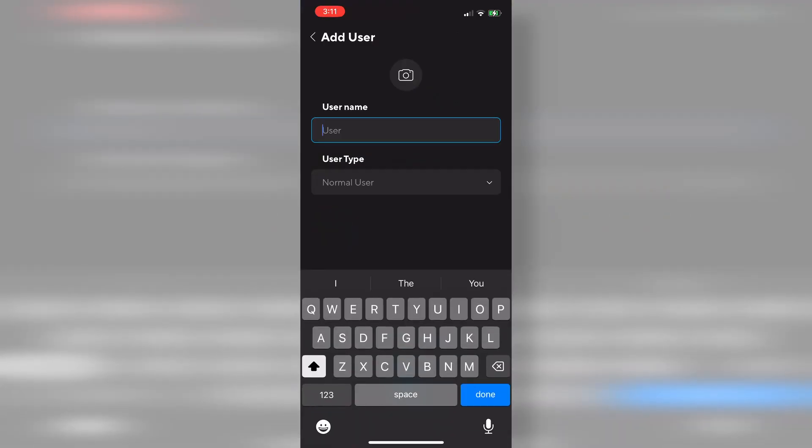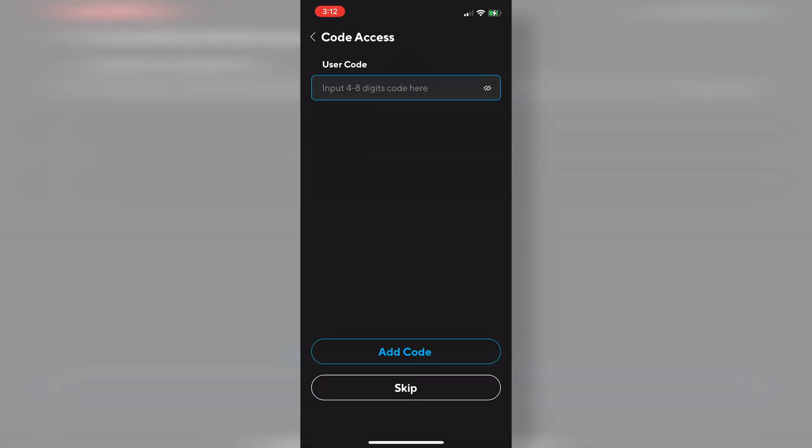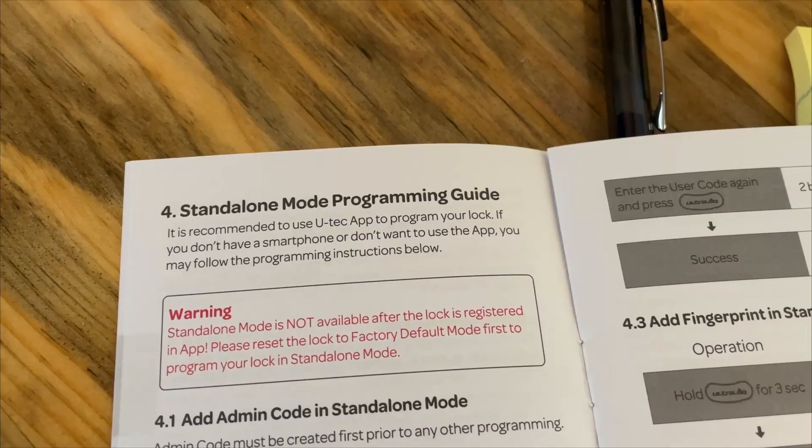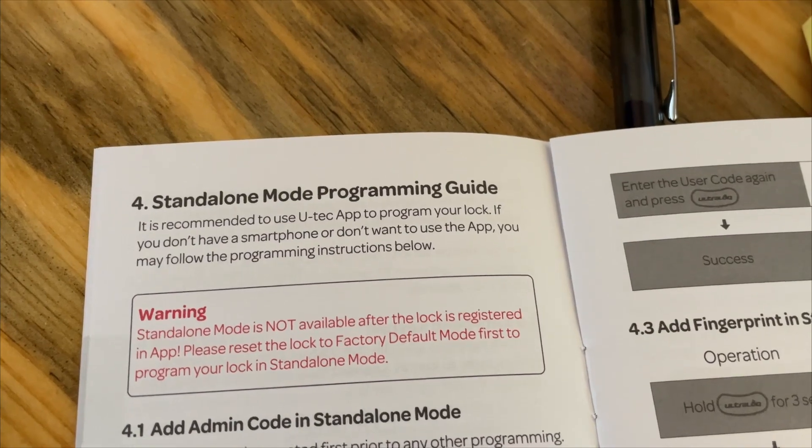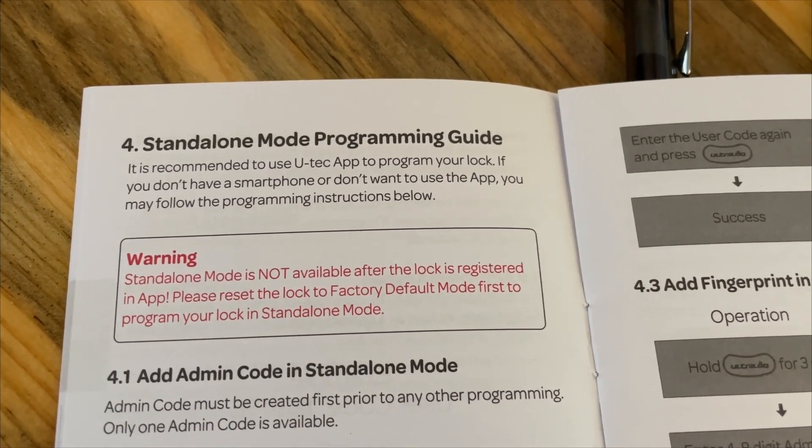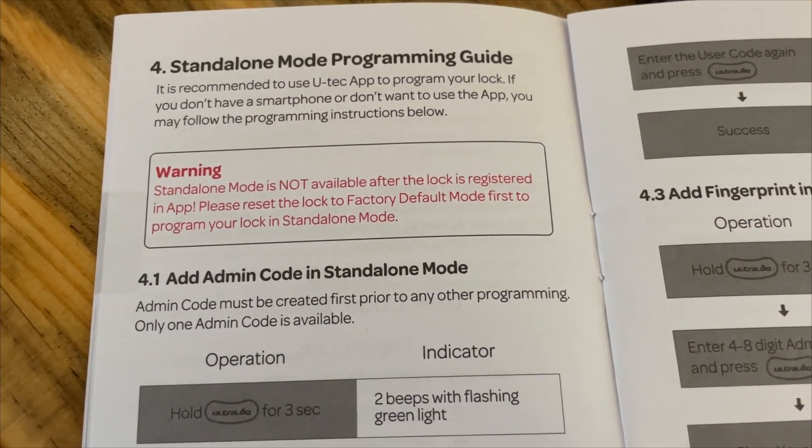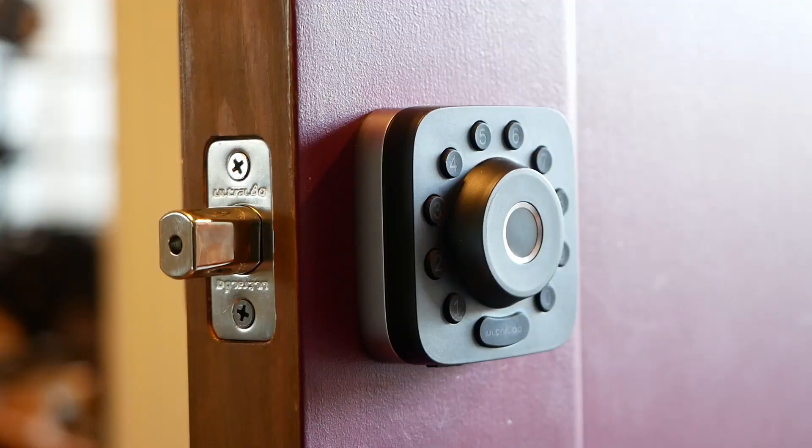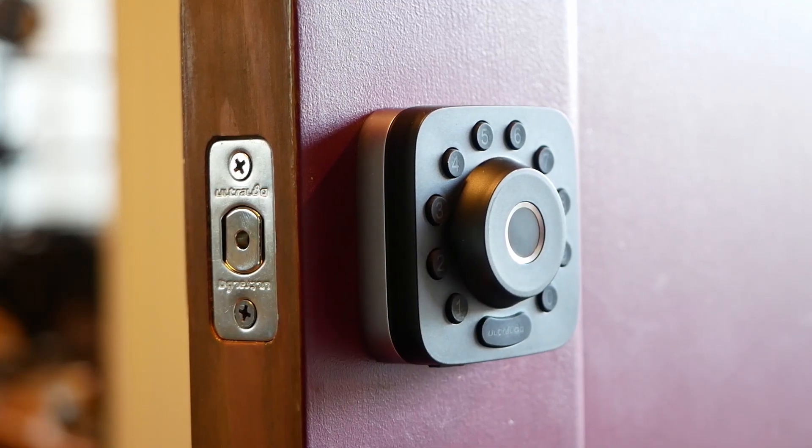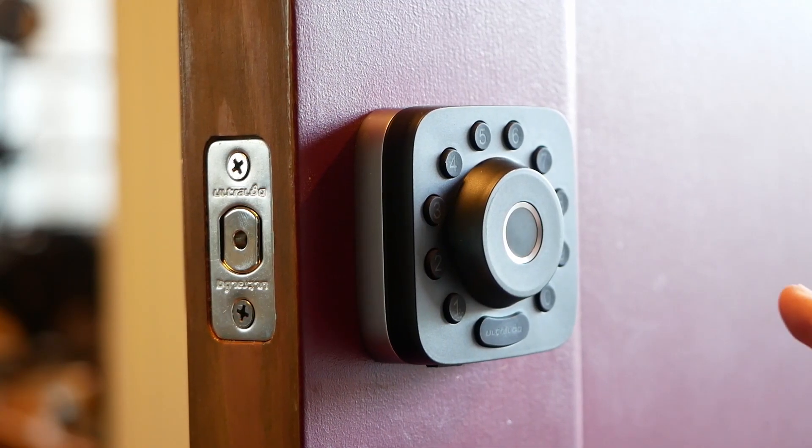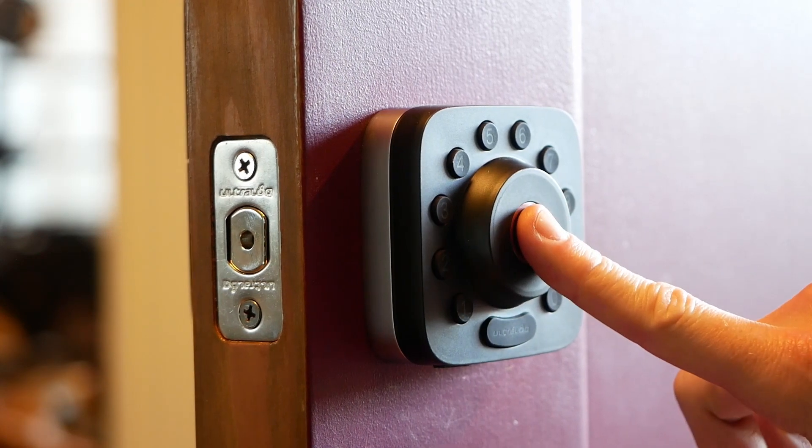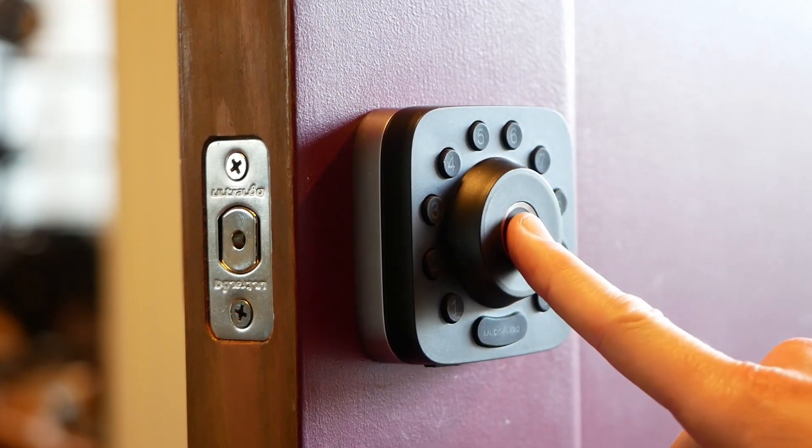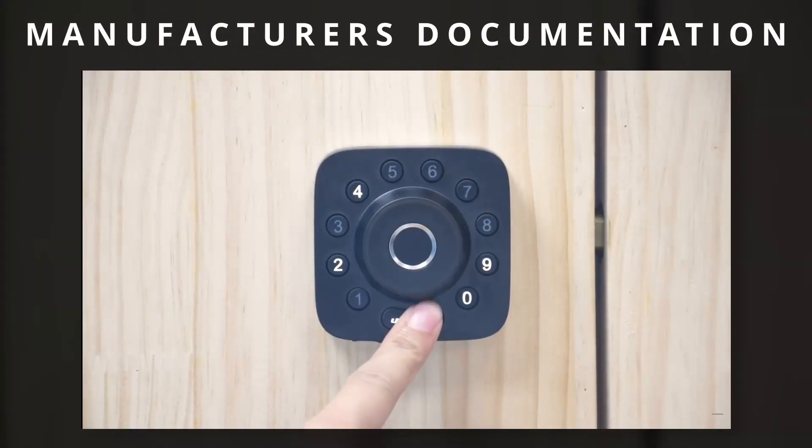However, my favorite feature that is enabled via the app is the ability to add temp users. Say a dog sitter is coming by, give them a time sensitive code. Very handy. That said, and unlike many other brands out there, this product can work in standalone mode, no app needed. You'll give up things like scheduling and remote access, but you'll get a little more security. I really, really appreciate they didn't do what so many others do and require an account to use their product. So bravo on that, Ultralock.